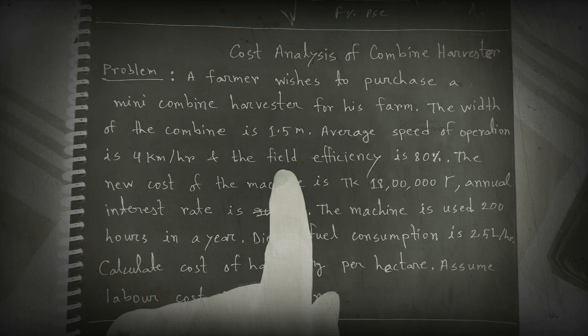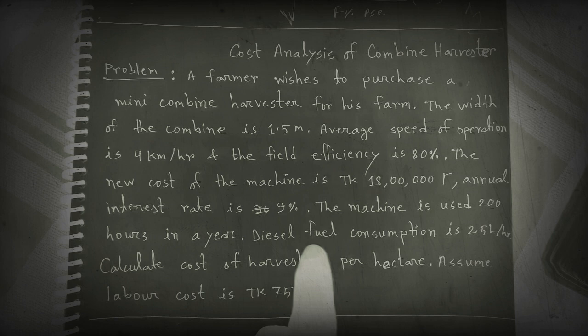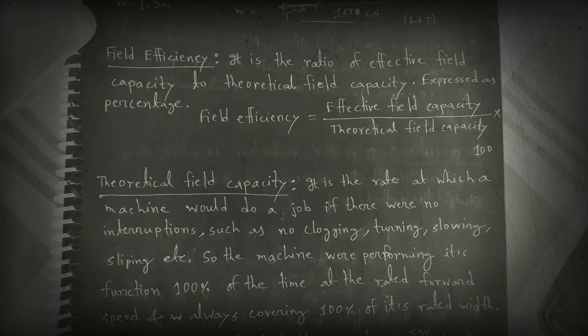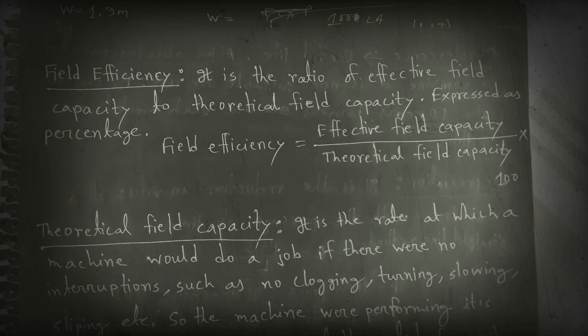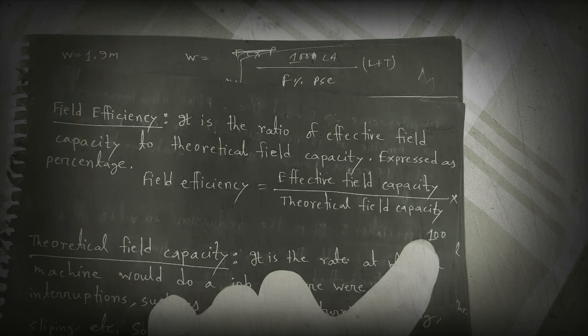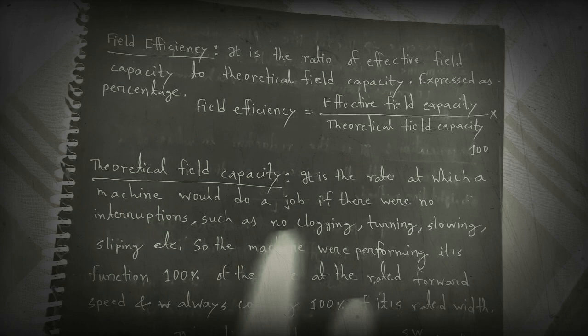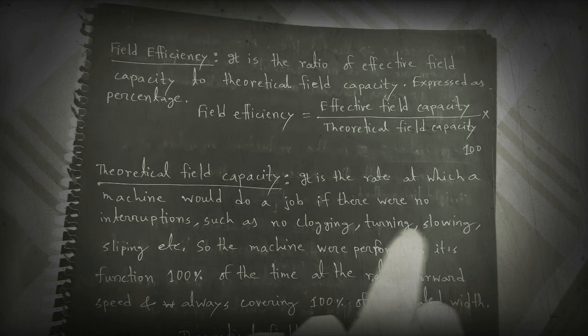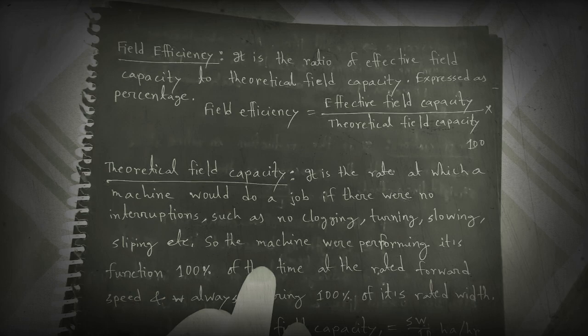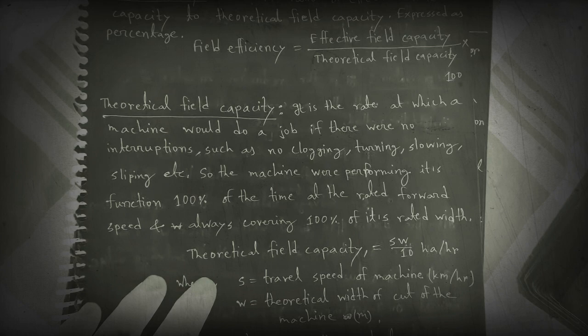There are many terms we need to understand to solve this problem, such as field efficiency, interest rate, and diesel fuel consumption. Field efficiency is the ratio of effective field capacity to theoretical field capacity, expressed as a percentage. Theoretical field capacity is the rate at which a machine would do a job if there were no interruptions — such as no clogging, turning, slowing, or stopping.